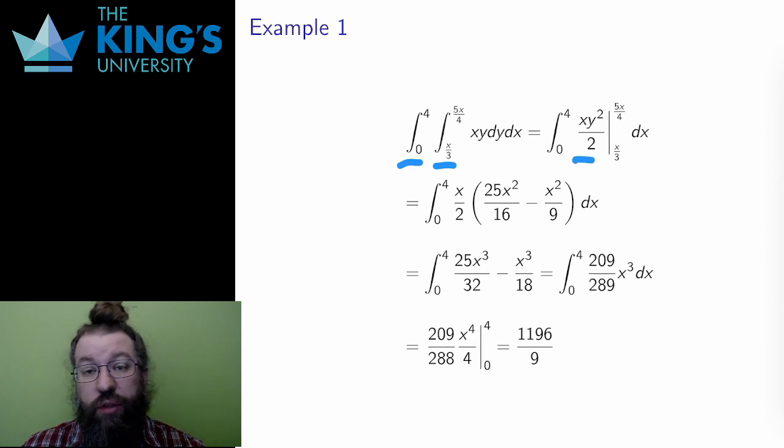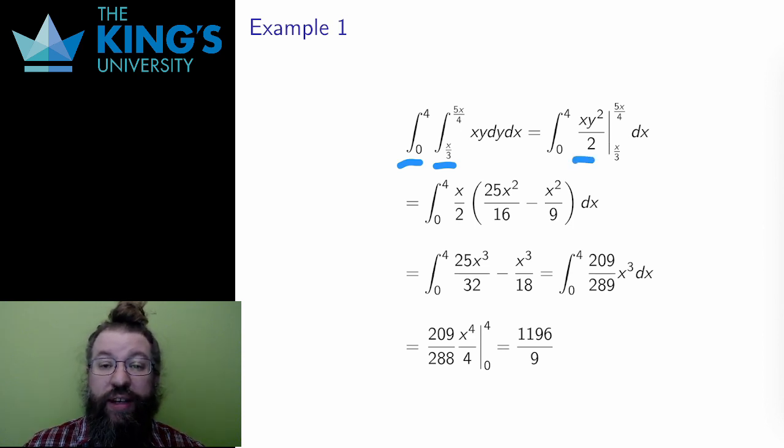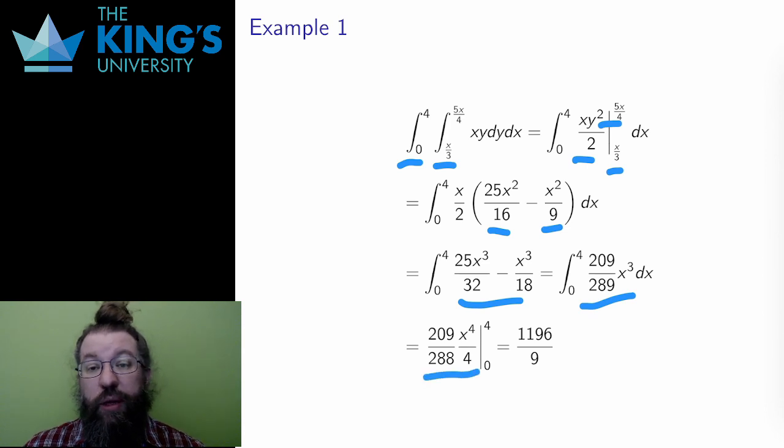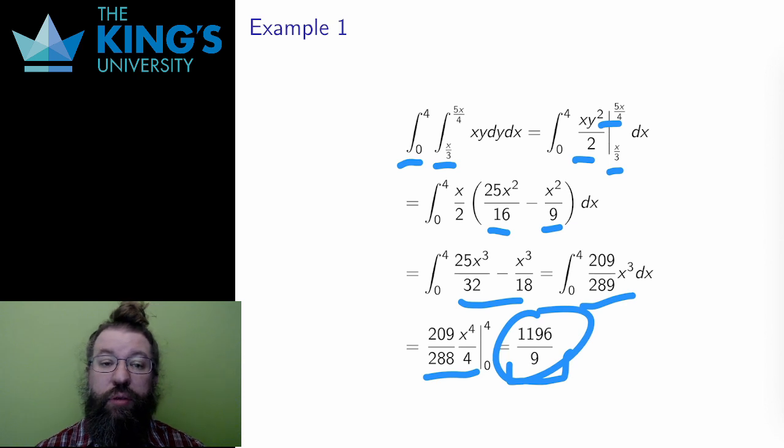The integral then is not too difficult. I integrate in y to get y²/2 over x, treating x as a constant. Then I evaluate on the bounds, squaring both and subtracting. And finally, I multiply x/2 in and simplify to a common denominator. Then I do the x integral and evaluate from 0 to 4, and get the final result for this piece of the total integral.